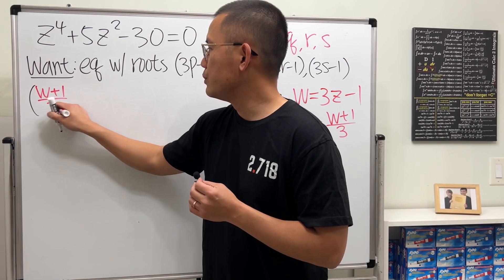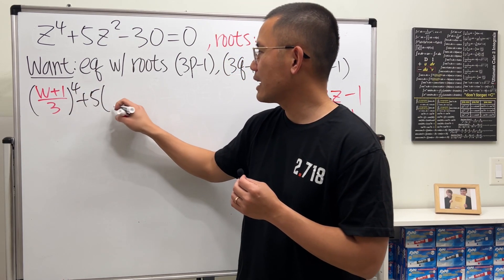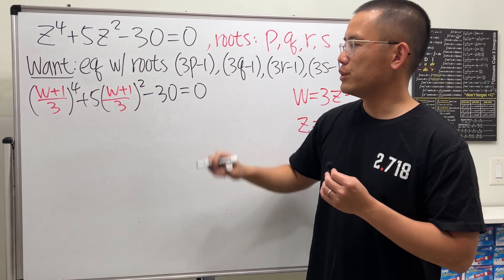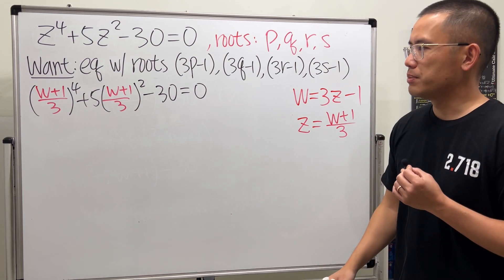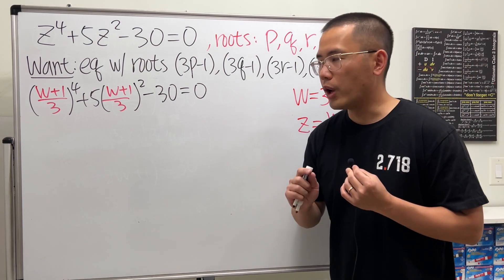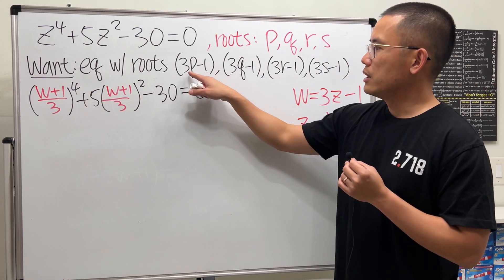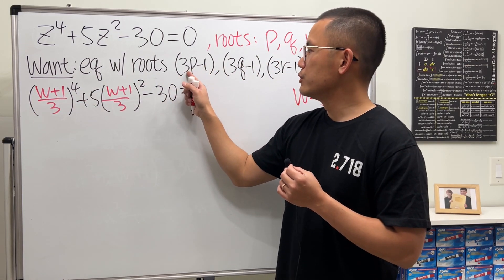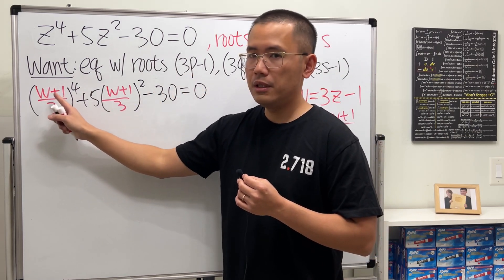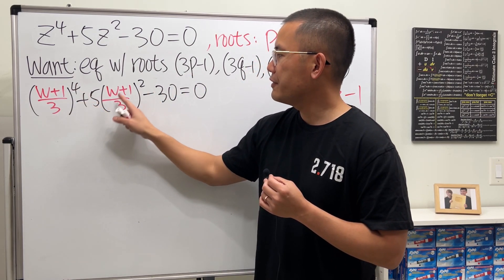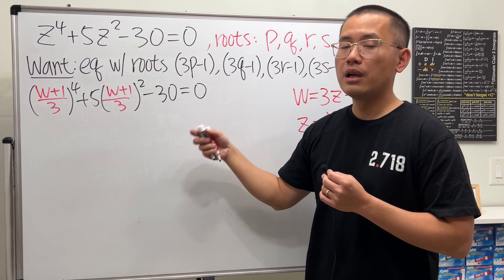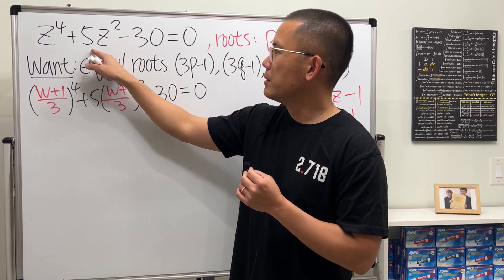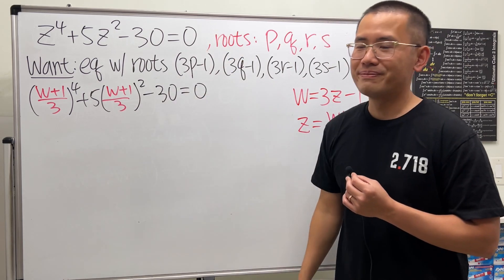So, ((w + 1)/3)^4 + 5((w + 1)/3)^2 - 30 = 0. Let me just take a second to explain why this really works. Well, this is the new equation, this is the root. So if you put 3p - 1 into here, plus 1 minus 1 cancel, 3 and divided by 3 cancel. So we'll just end up with p. So we get p^4 + 5p^2 - 30 = 0.